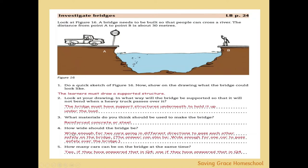How many cars can be on the bridge at the same time? This depends on your width answer. For a two-lane road, two cars can pass each other simultaneously; for a single lane, only one car passes at a time. Make sure your answers match up and that you've thought through the whole process — what kind of bridge it is and what your design looks like.